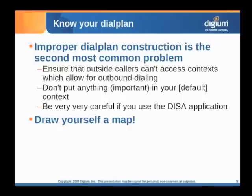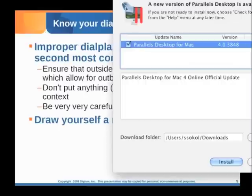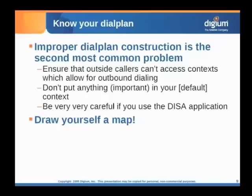Be careful what you put in the context called 'default.' If you use the stock configuration files that come with Asterisk, by default the SIP channel driver and the IAX2 channel driver allow unauthenticated calls into the system to come into this default context. That in itself is not a security concern unless you go putting things in that default context that allow outbound dialing. Don't place a pattern match to allow outbound dialing through a SIP trunk into that default context, because then you're allowing anybody to connect without authenticating and make outbound calls.